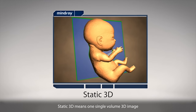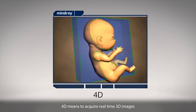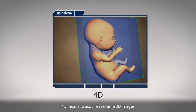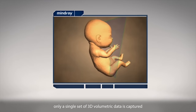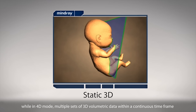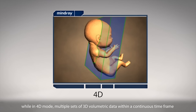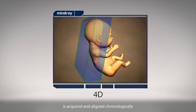Static 3D means one single volume 3D image. 4D means to acquire real-time 3D images. The difference is that in static 3D mode, only a single set of 3D volumetric data is captured, while in 4D mode, multiple sets of 3D volumetric data within a continuous timeframe is acquired and aligned chronologically.